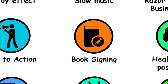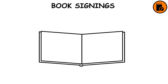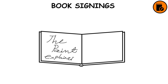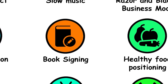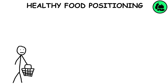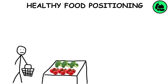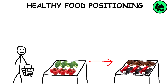Book Signing: Book signings boost book value for collectors, with authors providing signatures and optional personalized dedications. Healthy Food Positioning: Putting healthy fruit and veg at the front of the supermarket so you shop there first and don't feel guilty about the less healthy foods that go into your basket later.